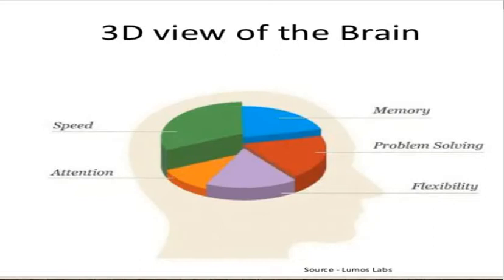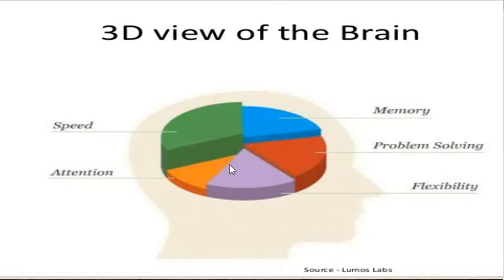All you need to do is also improve your attention. Based from the graph, it has a little pie allocated for attention — because you do not focus more on the topic you wanted to work out. You think of a topic immediately because of what you observe in your environment, what you read, what you watch from television or the internet. Memory, problem solving, and flexibility come along with the speed.